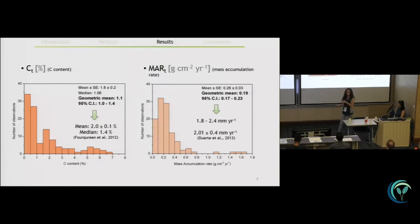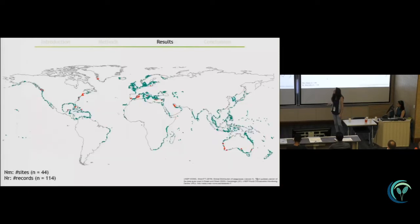So this data was confirmed by other studies and it was out there. So here what I'm showing is the seagrass distribution and then the red data points are the sites where we could and have data. So most of the, well I wanted to highlight that these data come from 114 sediment cores that come from a total of 44 sites.